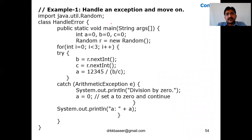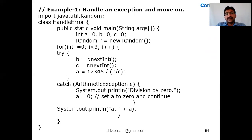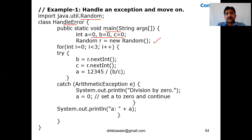Now let's look at a program demonstrating how to handle exceptions and move on. Previously, wherever an exception was raised, we encountered it and continued execution. Here, using a class called HandleError, we import Random, declare variables a, b, c initialized to zero, create a Random object, and run a for loop from i equals 0 to less than 3 — repeating three times.